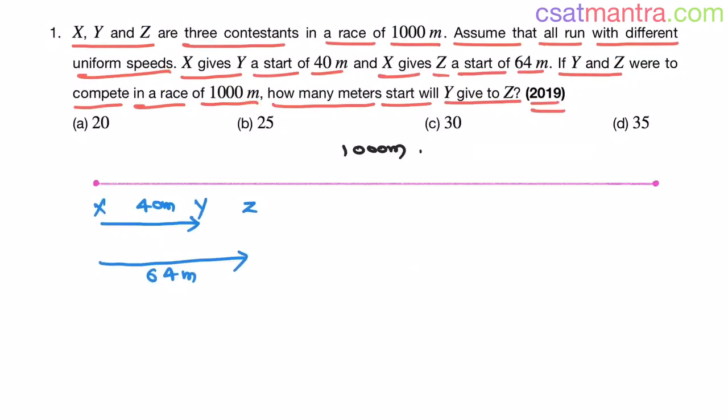This is a 1000 meters racetrack. We have three contestants X, Y and Z. They all run with different uniform speeds. Their speeds are different but each individual speed is constant throughout the race. That is what uniform speed means.